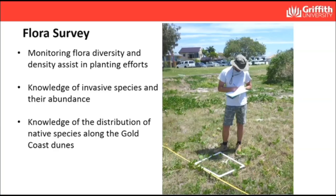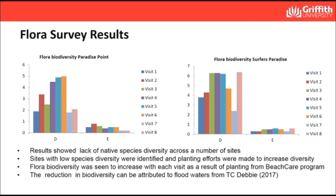We also did flora surveys, looking at what types of native species we have mixed in with our invasive species. Invasive species are very good at outcompeting our natives, and with them come all the associated pest creatures as well. Our flora survey results show that as our site visits increase, our native species diversity also increased. There is a lull at some sites such as Paradise Point, which can be traced back to flooding as well as a change in the boating speed limit on the canal there — once that speed limit was opened up, wave action increased and more shoreline erosion was observed.